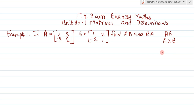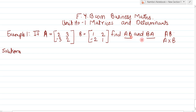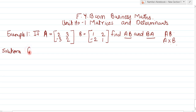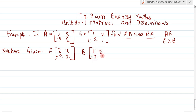So this example is of multiplication of matrices. Now how to solve this example? So solution: we have to find AB and BA. AB means A multiply by B, that is matrices A multiply by B. Given: A matrices is 2, 3, minus 3, 2 and B matrices is 1, 2, minus 2, 1.